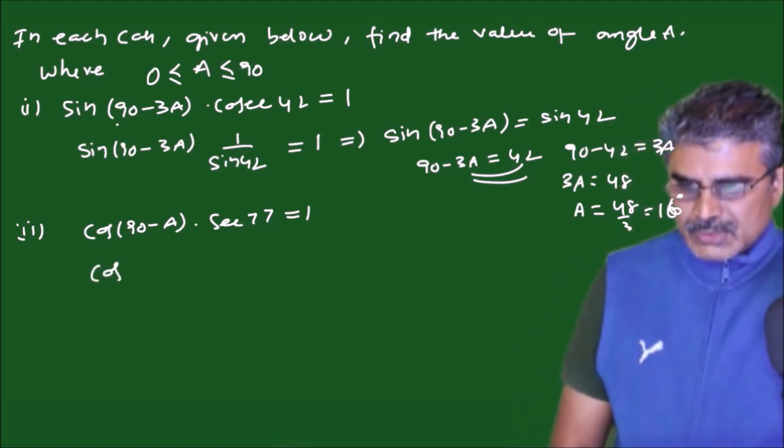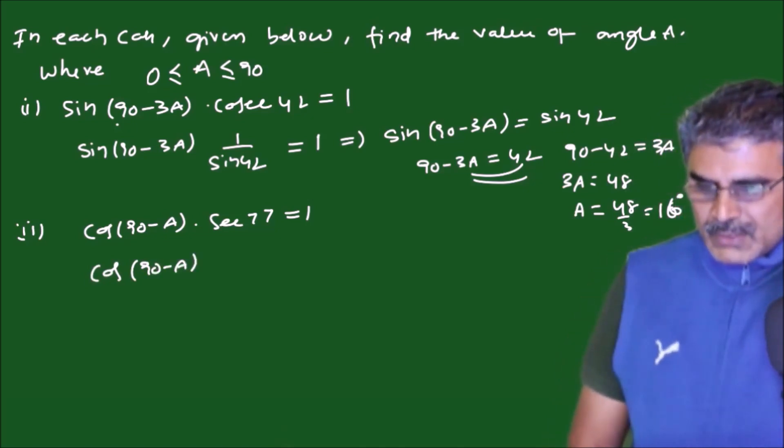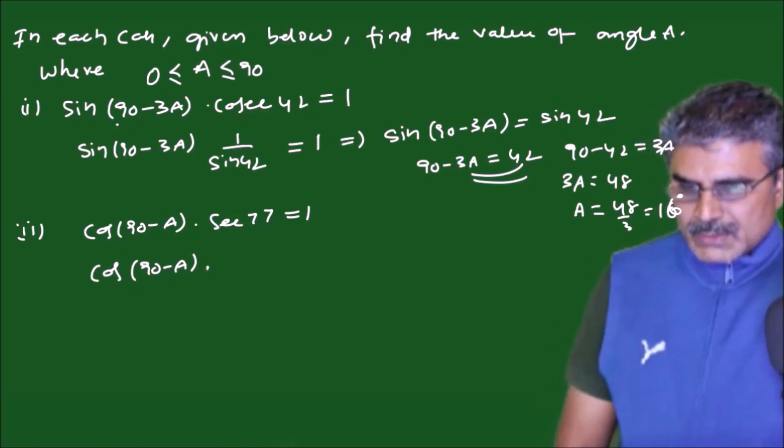Now consider the second case. Same here also, cos(90 minus A) is there, no need to convert into complement ratio. Here secant 77 I can write as 1 by cos 77 equals 1.